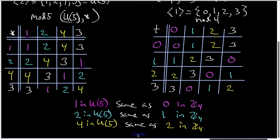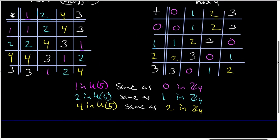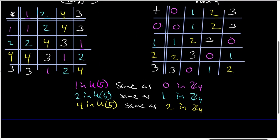And the final thing that I want to note is that in white, the 3 in the U5 table is the same as the 3 in the Z4 table.